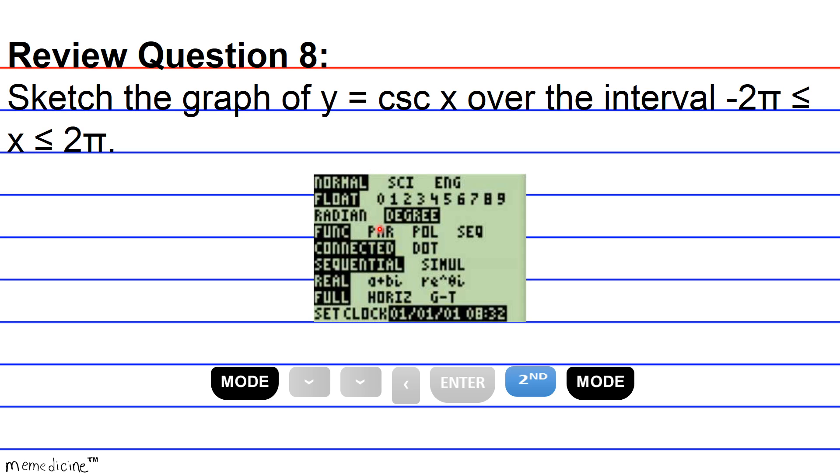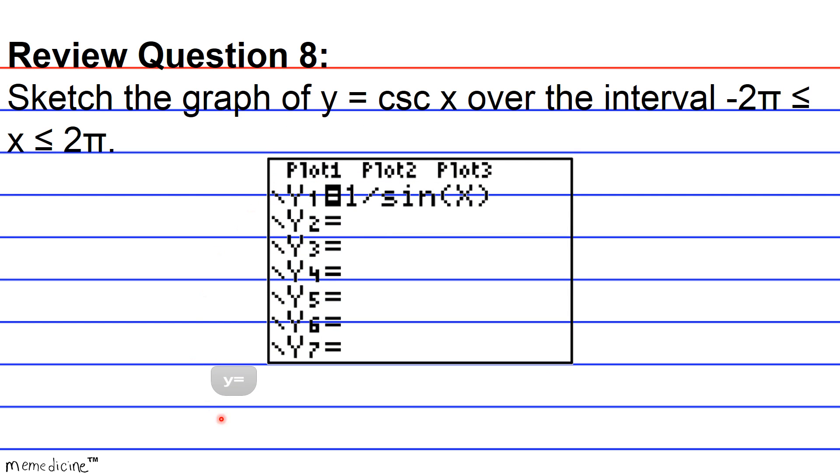The next thing that you're going to do now is input the cosecant of x function. We do this by hitting the y equals button at the top of the calculator towards the left-hand side, and the screen will come up. Your cursor will automatically highlight the y1 line. It will be bold and black background. That means that this will show if you are to graph this function. In order to input the secant of x, remember it's the reciprocal of sine. Most of these calculators don't have an actual cosecant button. So, what you have to do is manually manipulate sine. You're going to do 1 division sine, and then sine comes preloaded with an open parentheses. Then you're going to hit your variable button, x, t, theta, n. Usually, it's set to x, so an x variable should pop up. And then you're going to close out your parentheses.